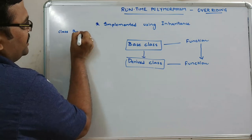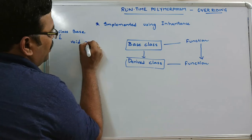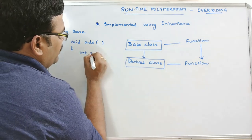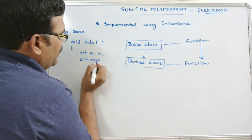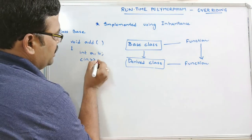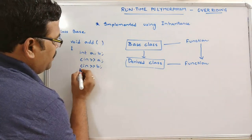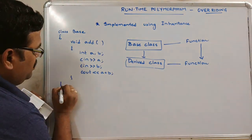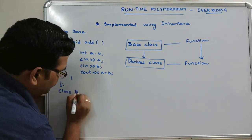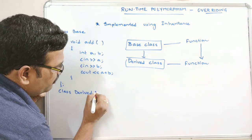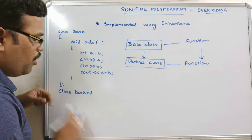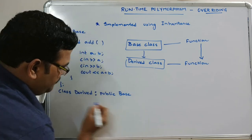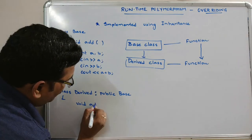Let's take an example. We have a base class with a function void add(int a, int b) that outputs a plus b. Then we write a derived class which achieves inheritance using the colon public specifier and the base class name, and here we again write the function void add.